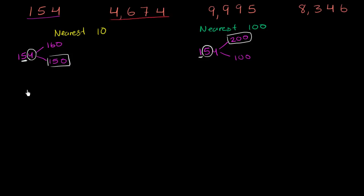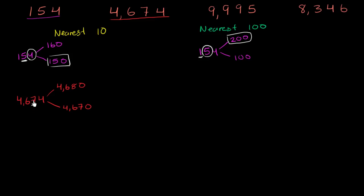So 4,674. The multiple of 10 above that is 4,680. The multiple of 10 below that is 4,670. Remember, we're concerned only with the multiple of 10, so it's either going to be 4,680 if we round up or 4,670 if we round down. To figure that out, we look at the ones place. If the ones place is five or greater, we round up; if it's less than five, we round down. It's once again less than five, so we round down to 4,670.